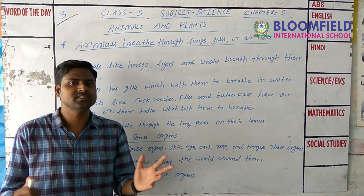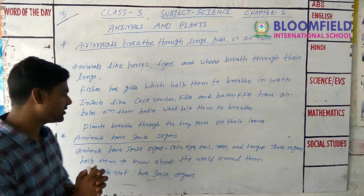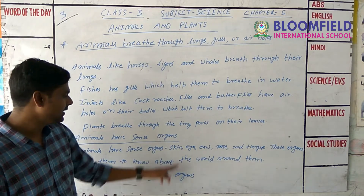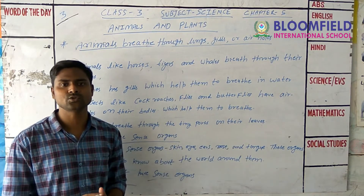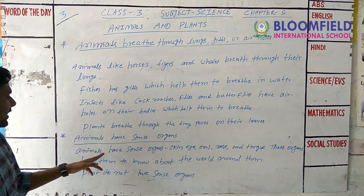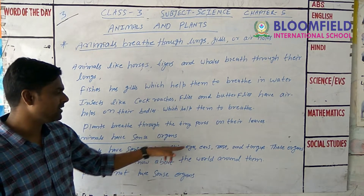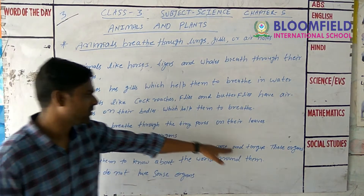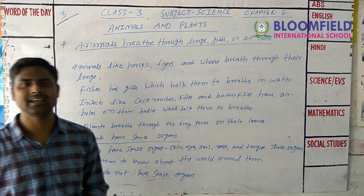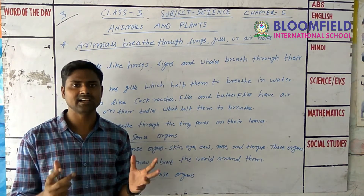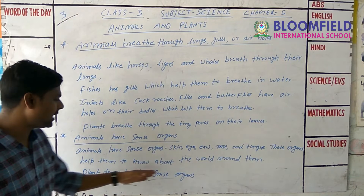Animals have sense organs — the eyes, ears, nose, skin, and tongue. These five sense organs help animals, including human beings, to know about the world around them. Plants do not have sense organs.